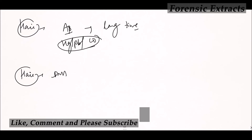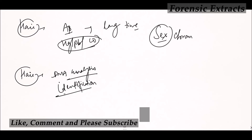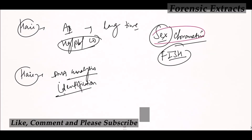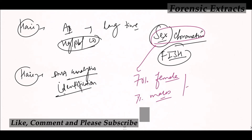The hair bulb can be used for DNA analysis for identification purposes. Sex determination can also be done using sex chromatin by fluorescent in-situ hybridization (FISH) technique. Sex chromatin is seen in 70% of females and 7% of males, and can be used to differentiate X and Y chromosomes.